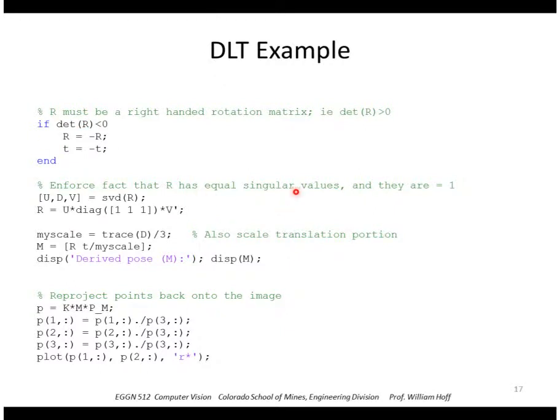Here's where we enforce the fact that R has equal singular values. We take the SVD of R. We recreate R using a matrix where the diagonals are all 1, 1, 1. So that enforces this to have singular values of all 1s.